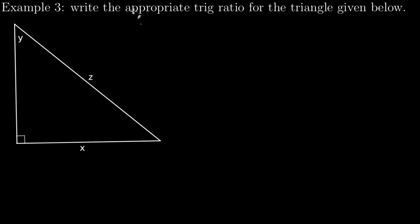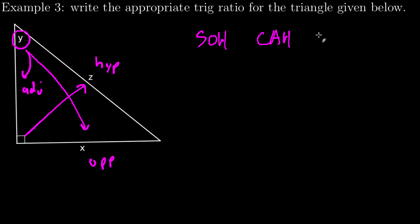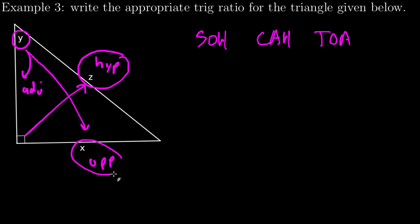Now write the appropriate trig ratio for the triangle given below. I'll start by noticing here's my acute angle. Across from the right angle is the hypotenuse. Across from my given acute angle is the opposite leg. Next to my given acute angle, the leg there is the adjacent leg. The hypotenuse is marked with Z and the opposite is marked with X.